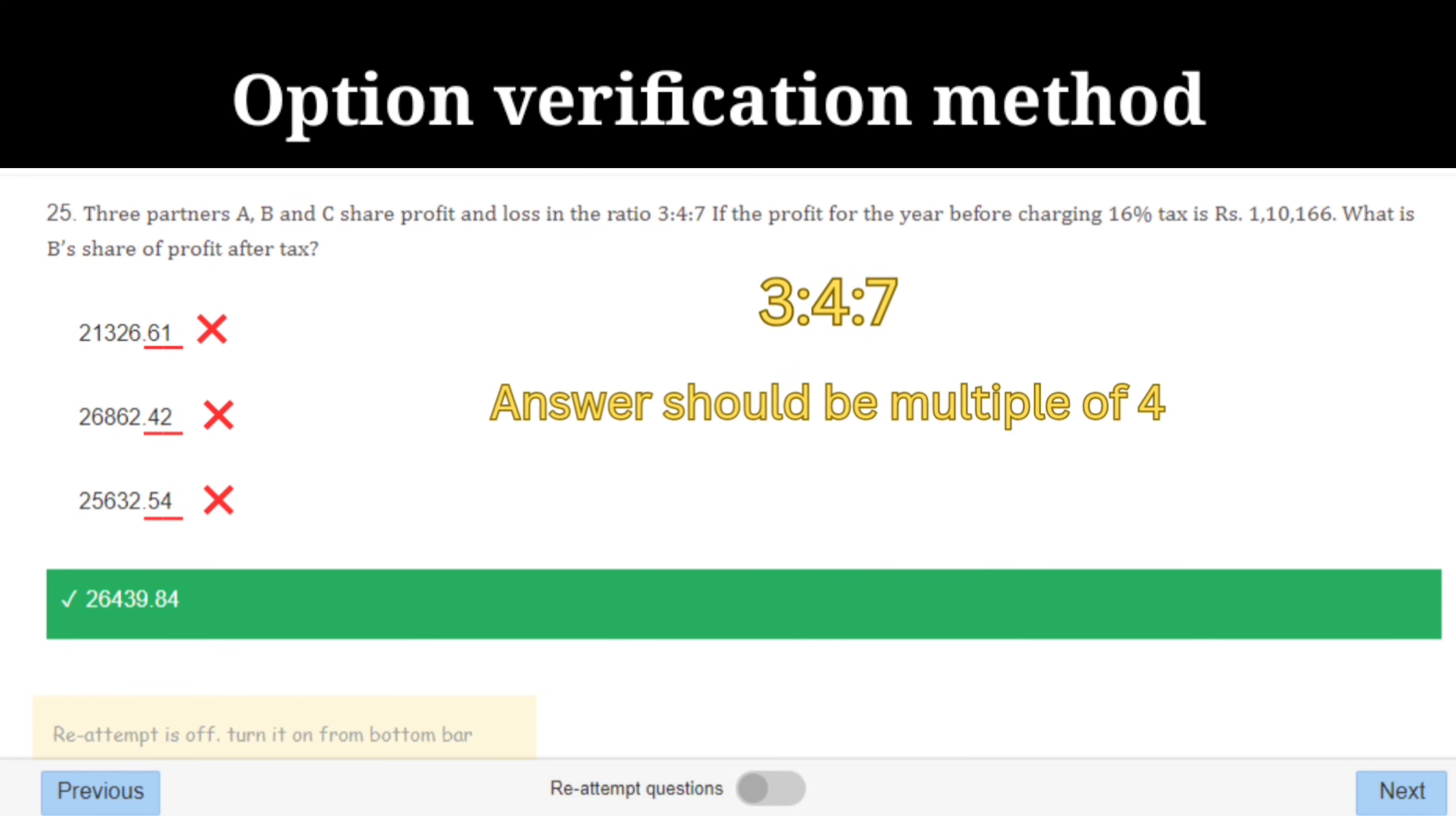Next question: what is B's share of profit after tax? The ratio is given as 3 is to 4 is to 7, which means the final answer should be a multiple of four. Just verify the options and you will get the answer.